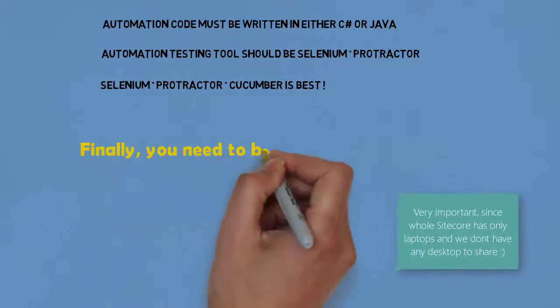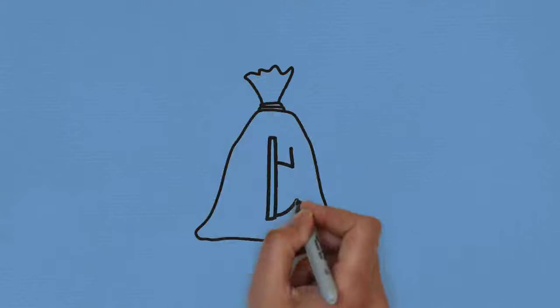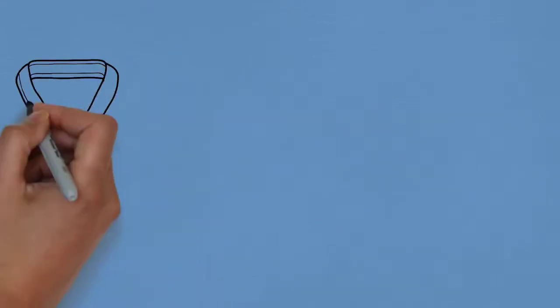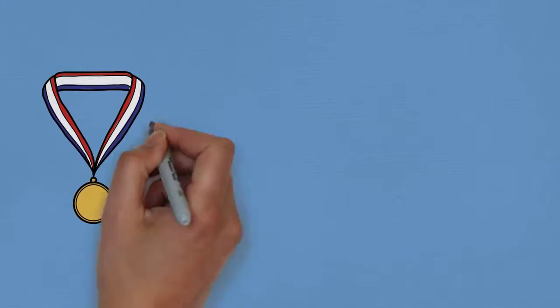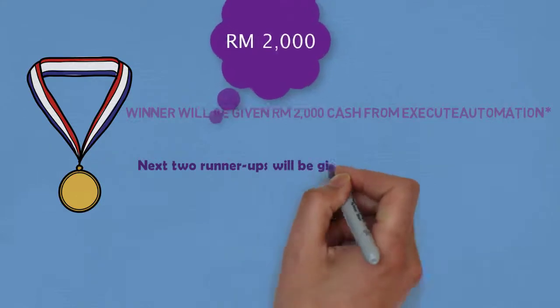Finally, you also need to bring your own machine for the contest because Sitecore won't provide that. And what about the bounty? We have not spoken about that yet. The winner of the contest will be given a cash award of RM2000 from Execute Automation, and the next two runners will be given cash awards from Sitecore.